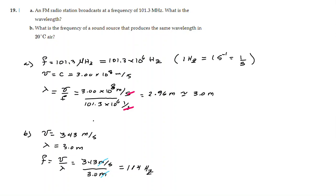So the frequency is approximately 114 Hz. Super important to understand in this problem: when we have the radio wave, its speed is the speed of light because it is an electromagnetic wave. And when we have the sound wave propagating through air, its speed is the speed of sound in air — at 20 degrees Celsius in this case, which is approximately 343 meters per second. Thank you for your attention, and please subscribe to my channel to get notifications about new problems that we are going to be solving. Thank you.